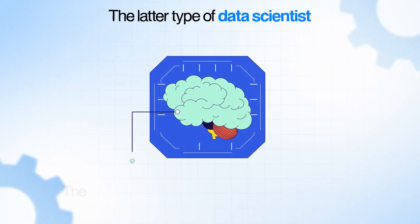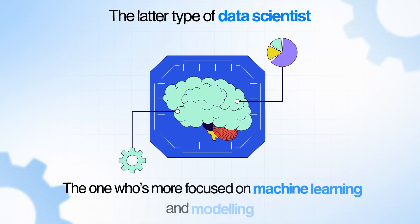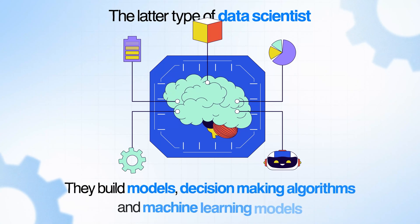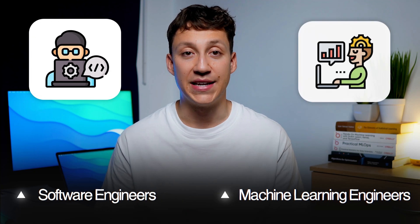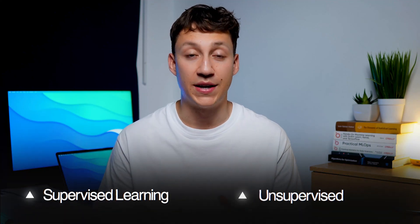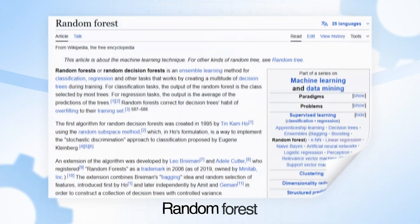The latter type of data scientist — the one more focused on machine learning and modeling — basically does just that. They build models, decision-making algorithms, and machine learning models that improve the way the business operates and its decision making. They will then work with software engineers and machine learning engineers to deploy those models so they make live predictions. Many of these models will be on the simpler side, using regular supervised and unsupervised learning techniques like XGBoost, Random Forest, K-Means, and maybe a few neural networks here and there but nothing overly complex.